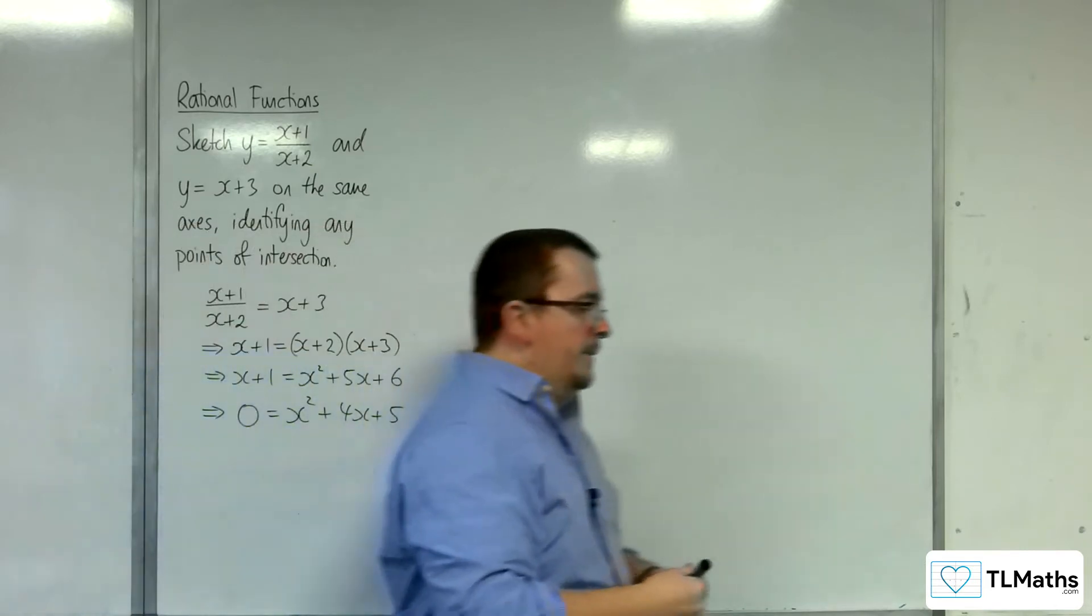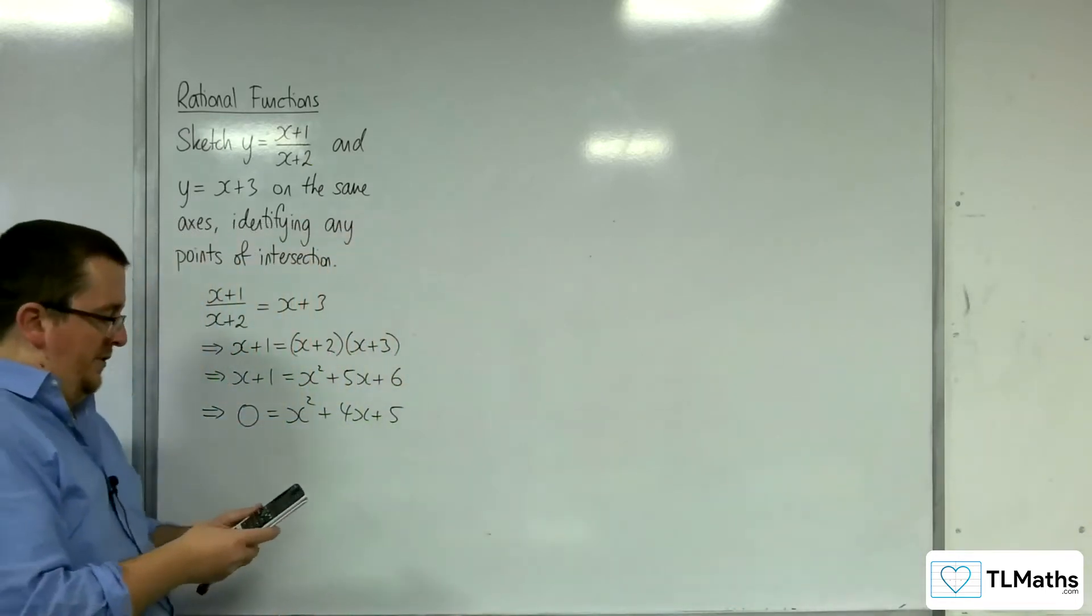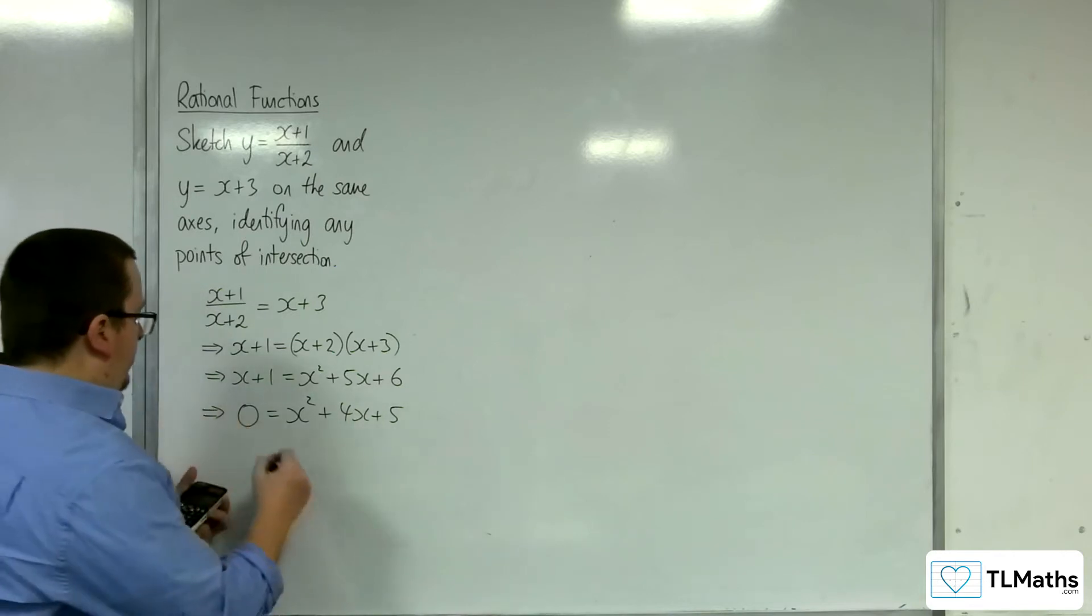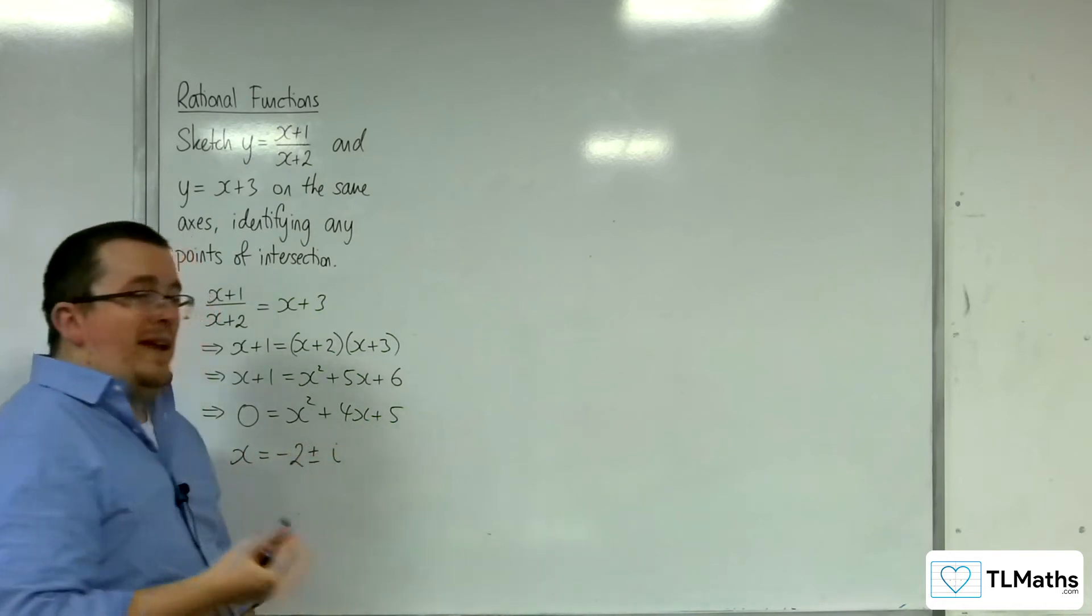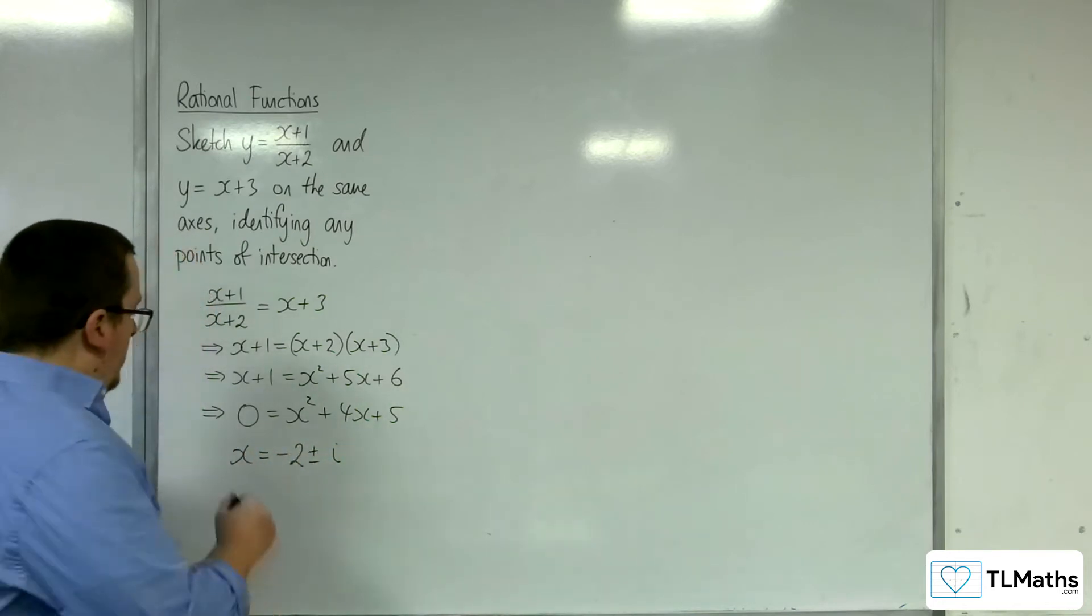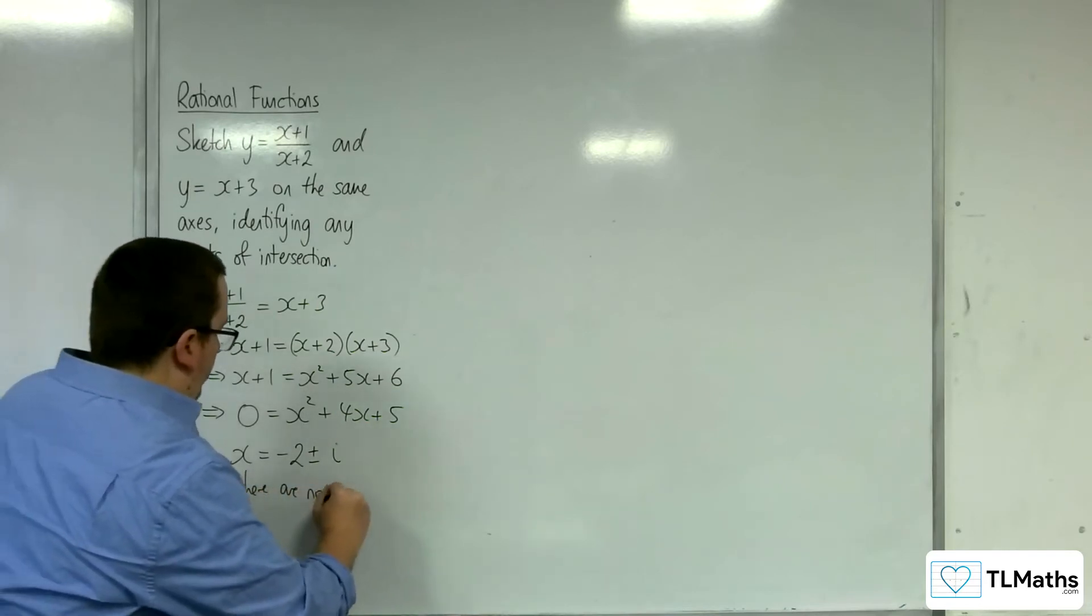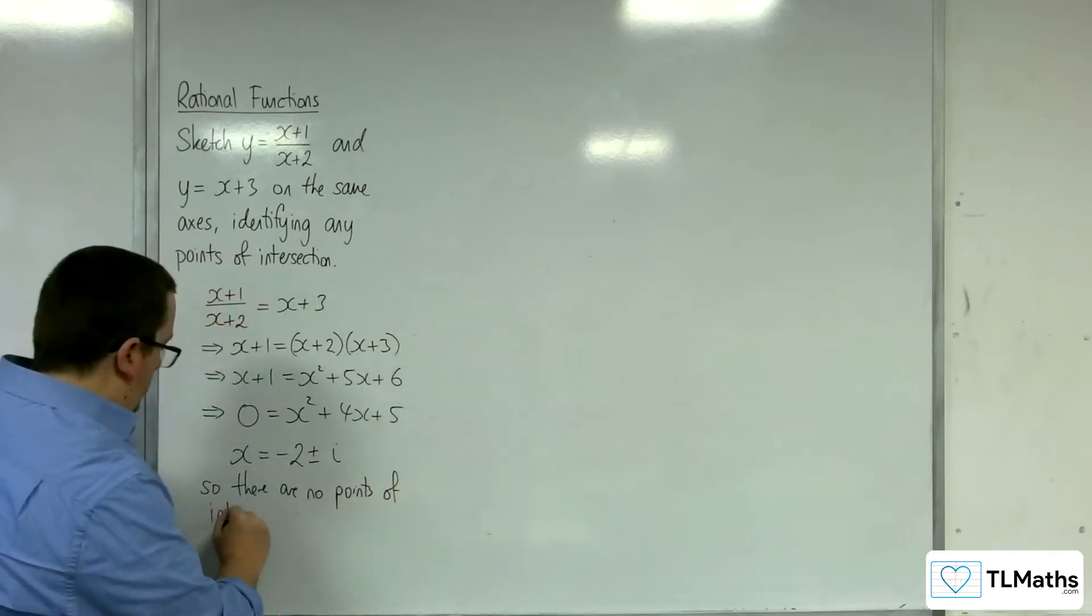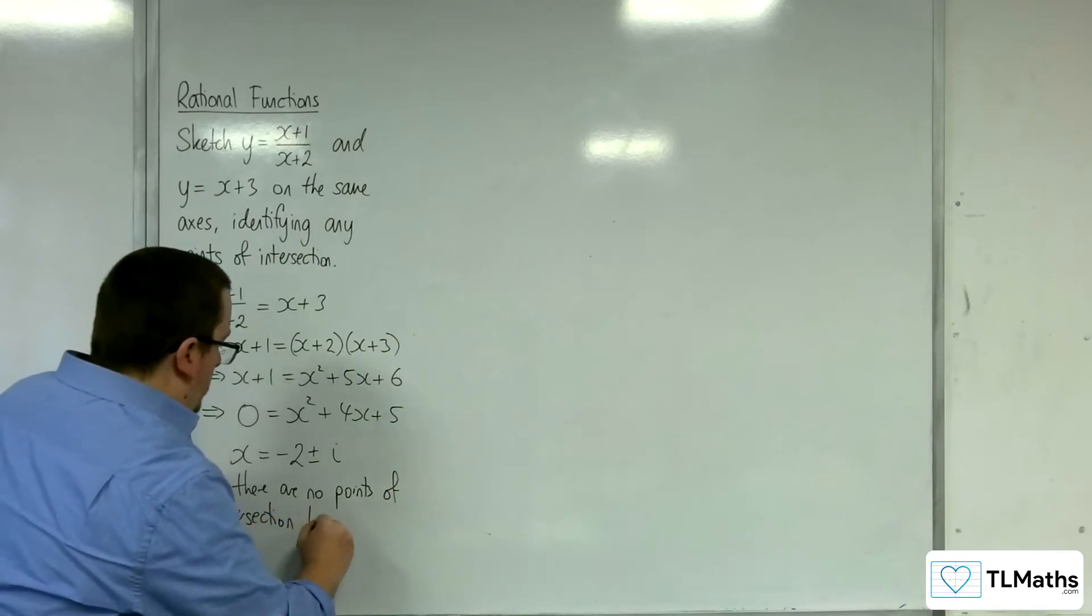Now if I put that into my calculator's solve function, so 1, 4, 5, we get minus 2 plus or minus i. So actually we get complex roots for the quadratic, so there are no points of intersection between the two graphs.